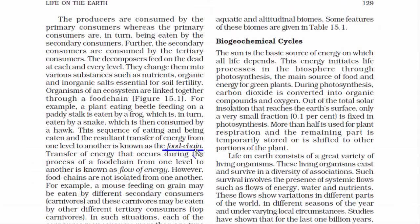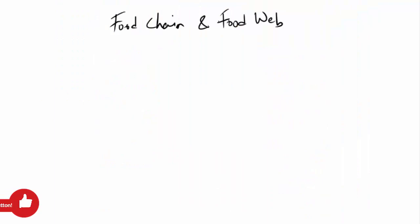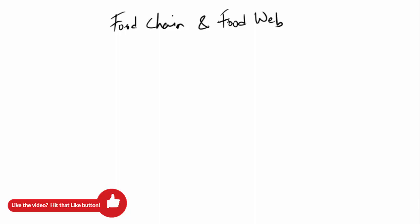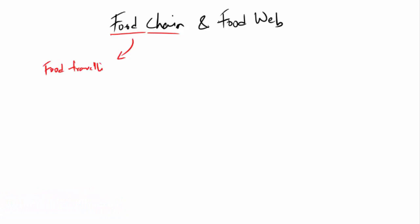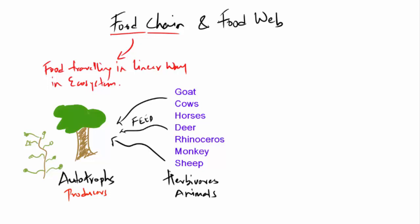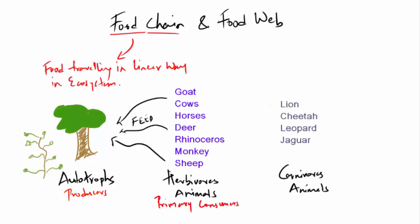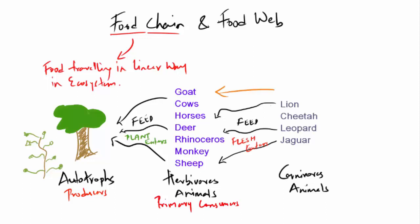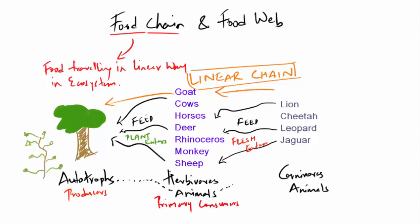A food chain is a straight single pathway through which food energy travels in the ecosystem. For example, trees and plants (autotrophs/producers) are eaten by herbivorous animals (primary consumers), which are then eaten by carnivorous animals. It forms a linear chain where food energy travels from plants to herbivores to carnivores — the high-level organisms feed upon a single type of low-level organism for food and energy.